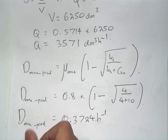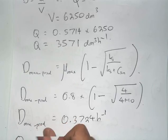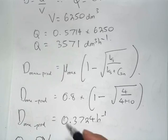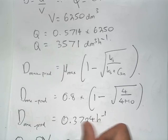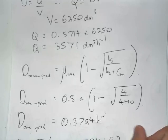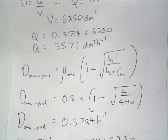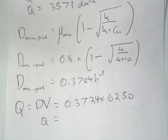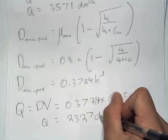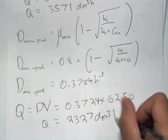We can then find the flow rate this occurs at by multiplying this dilution rate by the volume. We find that this flow rate for maximum productivity Q equals 2,327 decimeters cubed per hour.